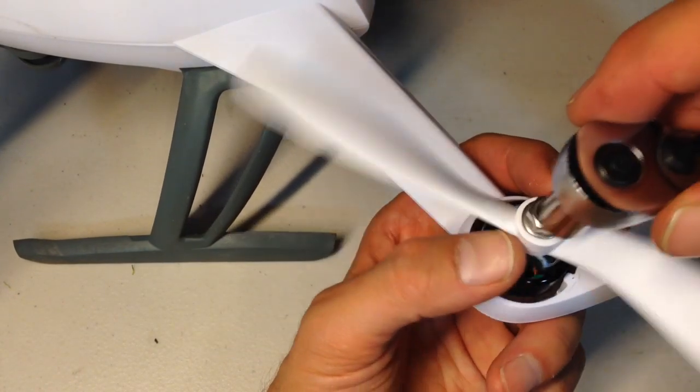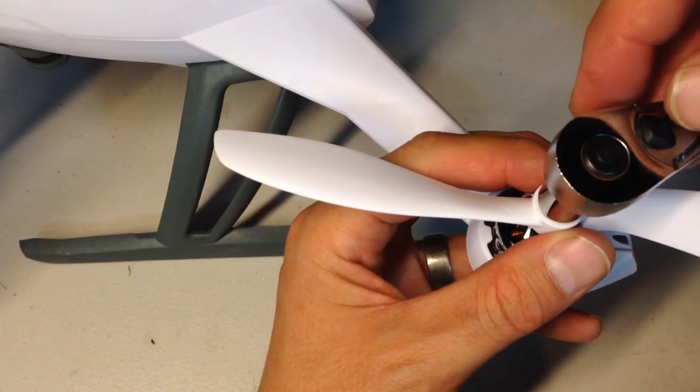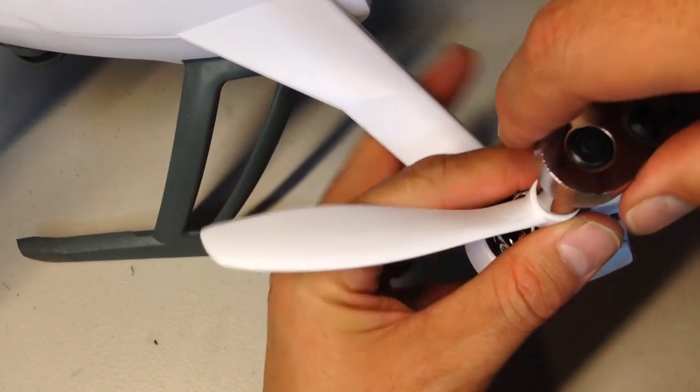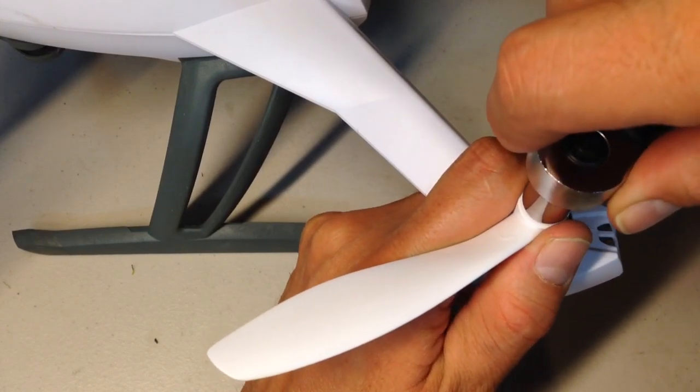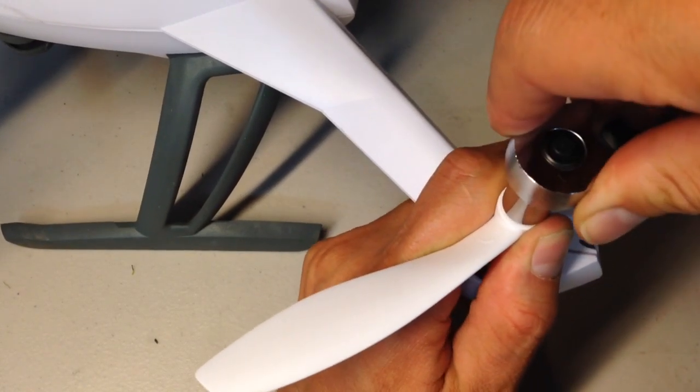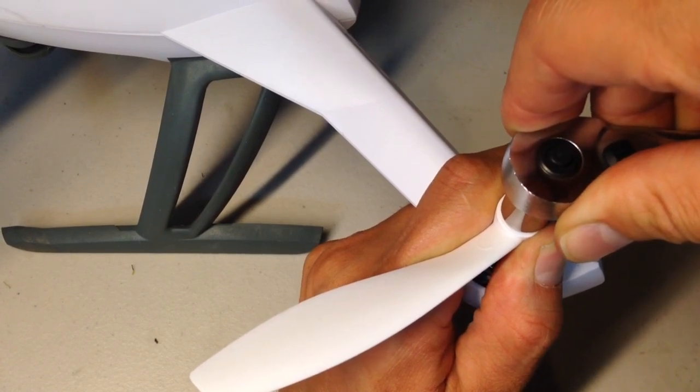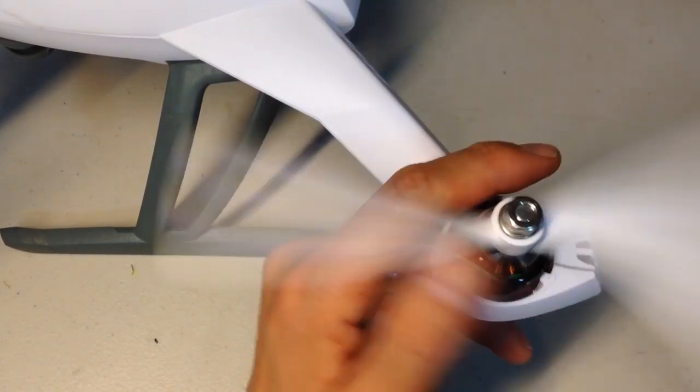Now you want to get your 10 millimeter socket wrench and go ahead and hold the entire motor and put your knuckle up against the prop here and give it a nice snug down here. You don't want to over-tighten just right. Okay. There you go.